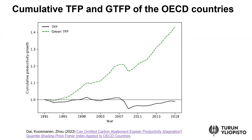In this paper, we argue that omitted greenhouse gas abatement can at least partly explain this kind of sluggish growth and stagnation of productivity growth in the Western countries.